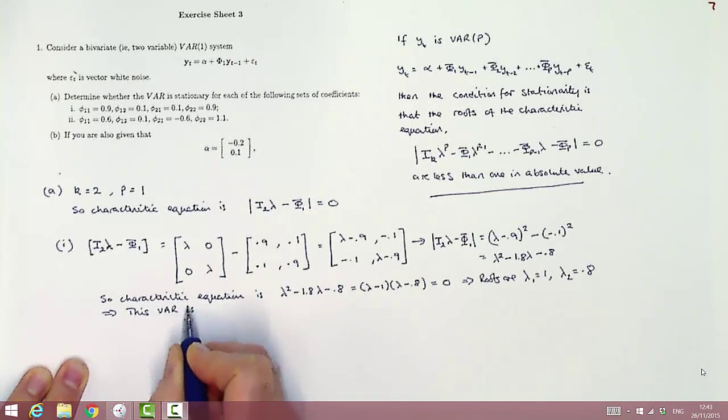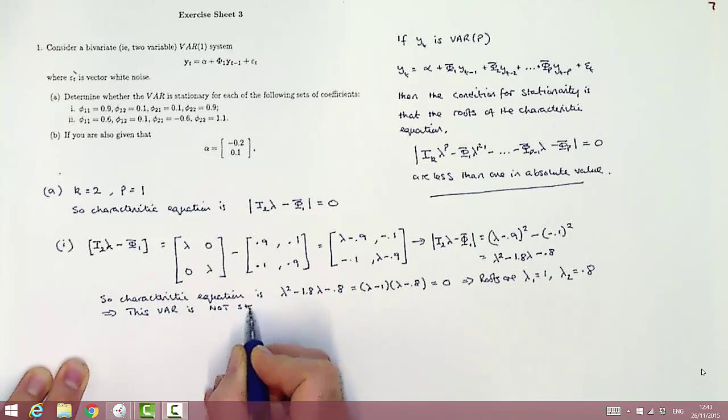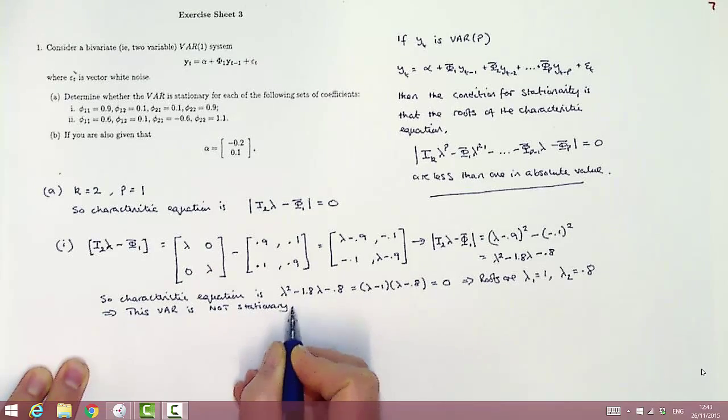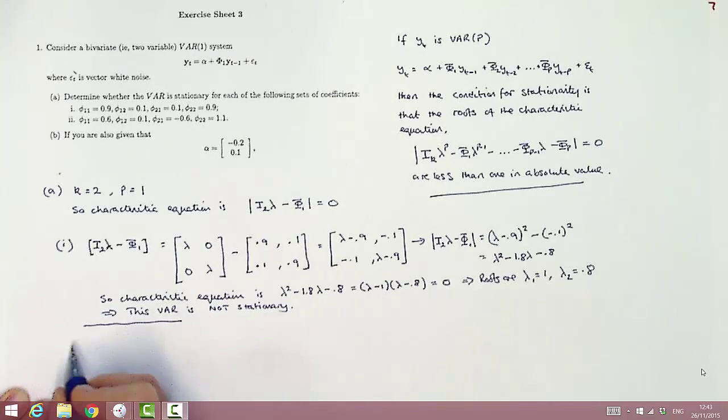Now the condition for stationarity was that those two roots should be less than 1 in absolute value. Clearly that's not satisfied for the first root, so this VAR is non-stationary.